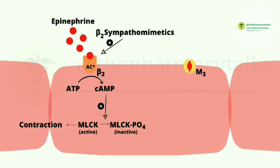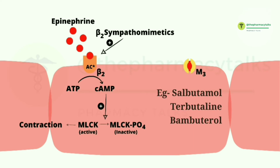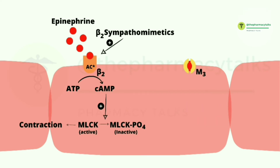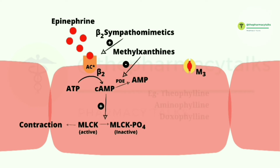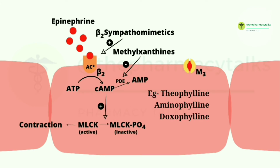So beta-2 sympathomimetic drugs are given to stimulate this process and treat asthma. Examples are salbutamol, terbutaline, and bambuterol. Now, cyclic AMP formed during this process can be converted into AMP by the action of phosphodiesterase, which can cause asthma. So to treat this, methylxanthines are given. They inhibit phosphodiesterase and thus prevent the breakdown of cyclic AMP, thereby treating asthma. Examples of methylxanthines are theophylline, aminophylline, and doxophylline.